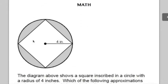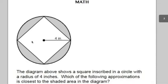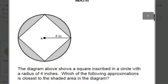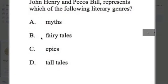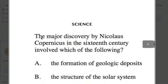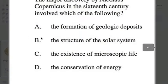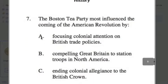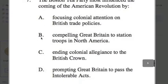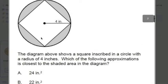The problems are included here and they're also in the Dropbox. You have a math problem — that first one was a geometry question. You have an English problem; it looks like we're dealing with explaining myths, fairy tales, and epics. A science question on Nicholas Copernicus. And a history question on the Boston Tea Party and the American Revolution.